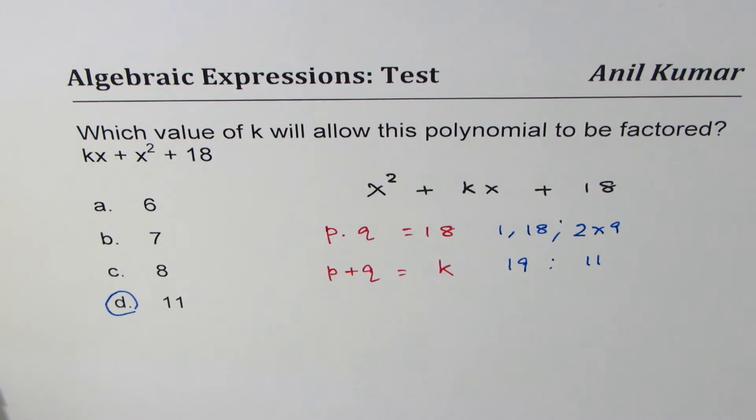So, like this, we can easily get to the solution. It is always better to start with the extreme. Say 1 times 18 we started with, so that we can run through all the combinations without missing, and find it easily.